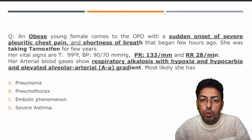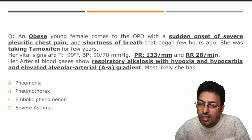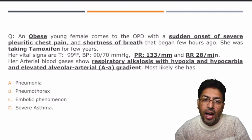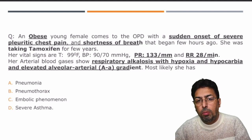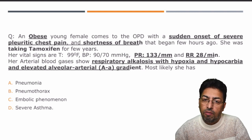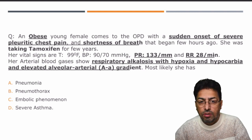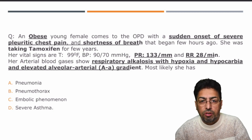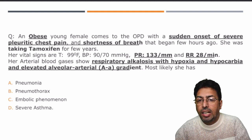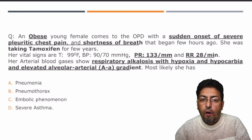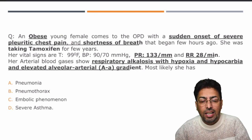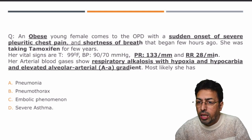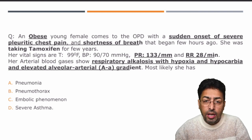Option number one: pneumonia. Pneumonia would most probably present with cough, acute or chronic, and there will be an increase in blood counts — TLC will be increased; in chronic cases, lymphocyte count would be increased. There will be a clinical scenario of sepsis with fever. So there is nothing likely suggestive of a pneumonic condition, whether bacterial, viral, or any other type of pneumonia.